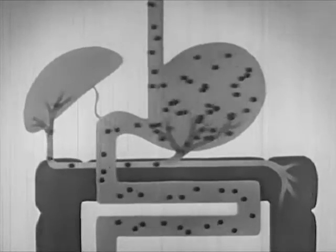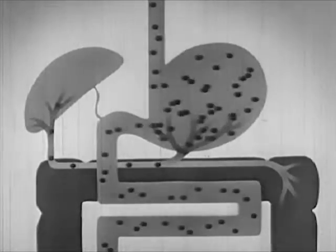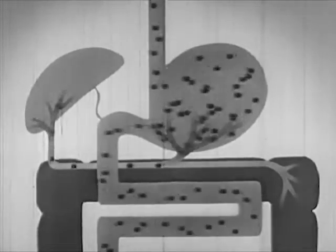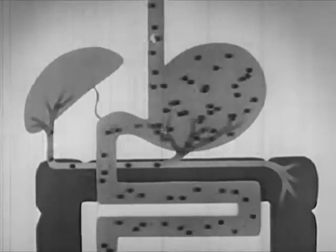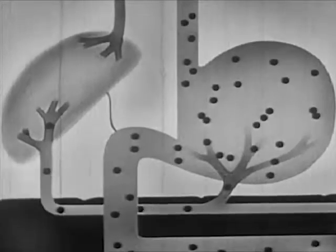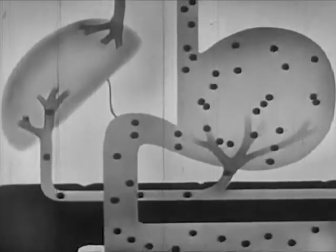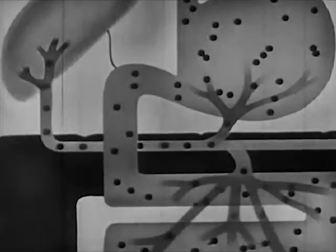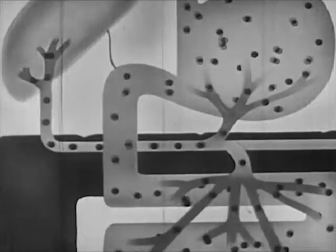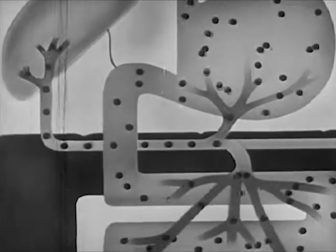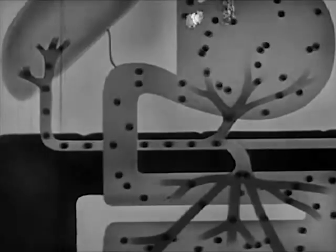Capillaries in the stomach lead into a branch of the portal blood vein that connects with the liver shown at the left. These capillaries absorb alcohol directly from the stomach, and the portal vein carries it to the liver. Other capillaries absorb alcohol from the small intestine shown at the bottom, and the portal vein carries it on to the liver.